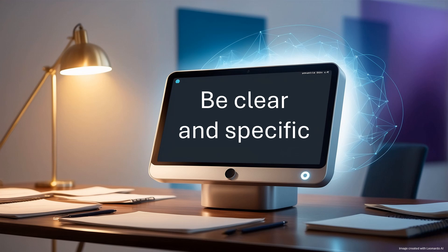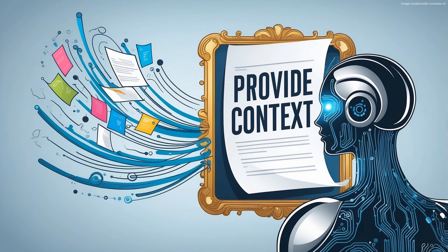Tip 3: Provide context. Give the AI sufficient background information to understand your request. For instance, you may want to explain a definition of a particular technical term you are using. The more context you provide, the better the AI can tailor its response.